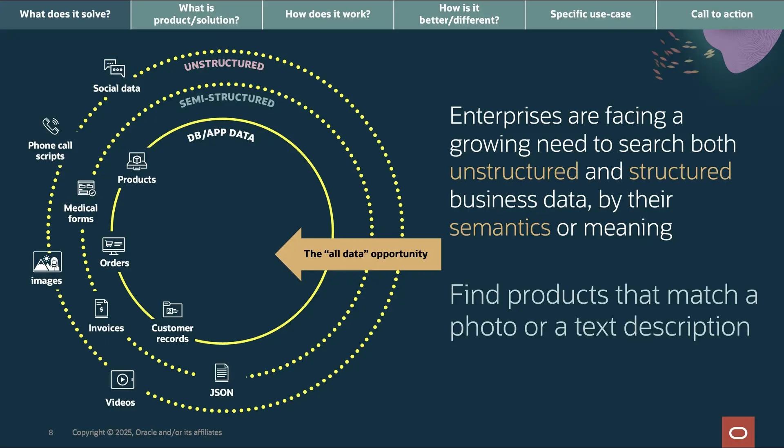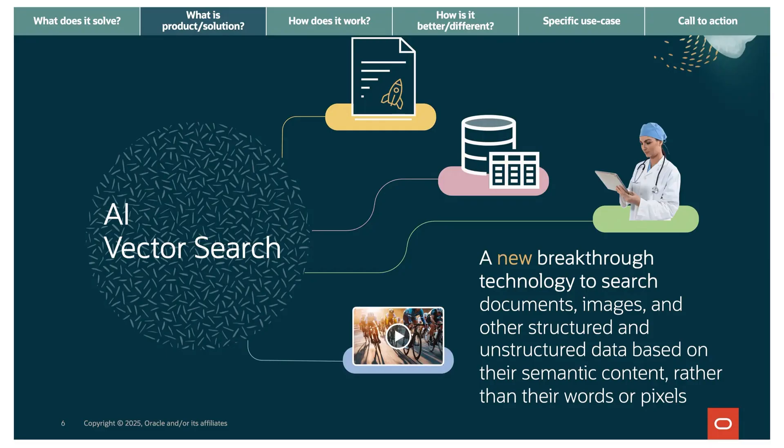So what exactly is AI Vector Search? AI Vector Search fundamentally changes how we search documents, images, and other structured data. The key difference? We search on semantic meaning, not just words or pixels. Think about a doctor researching similar patient cases. Traditional search requires exact medical terminology. Vector Search understands that 'cardiac arrest,' 'heart attack,' and 'myocardial infarction' are, in fact, the same concept. It works across all data types — text finds related images, images find related videos. Everything is searchable by meaning, not just keywords or metadata.